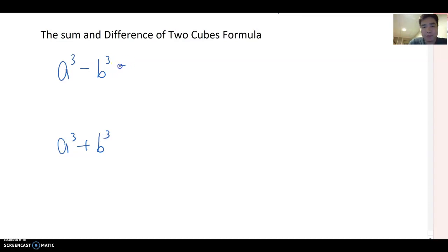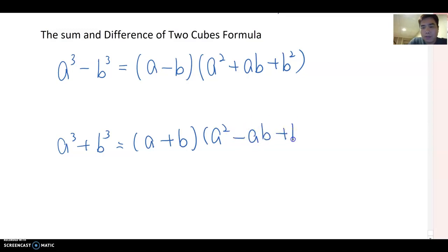So this becomes a minus b, and then the right side becomes a square plus ab plus b square. Similarly, this becomes a plus b, and then the right side becomes a square plus ab plus b square.